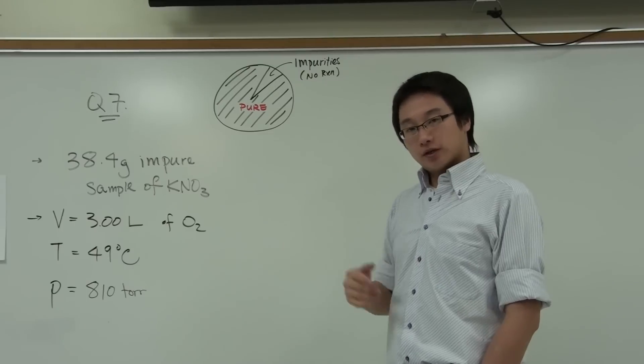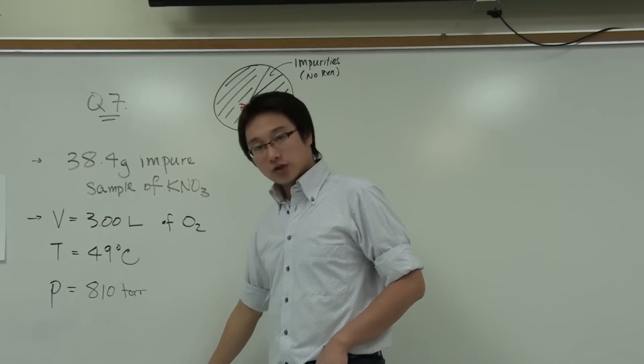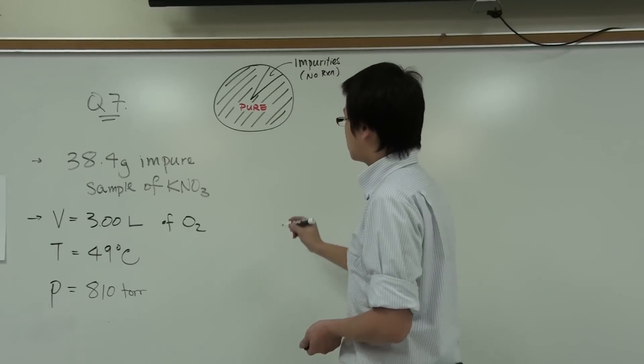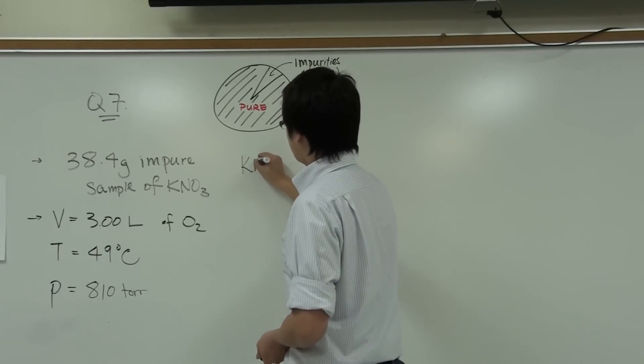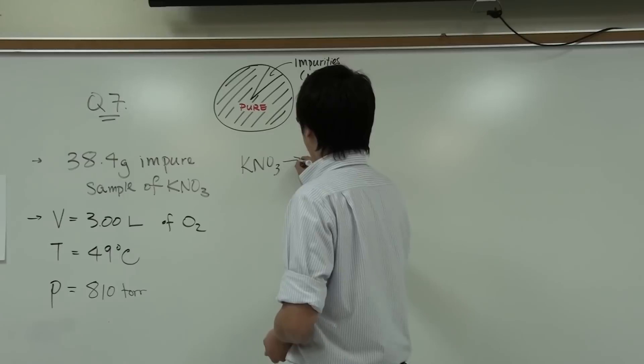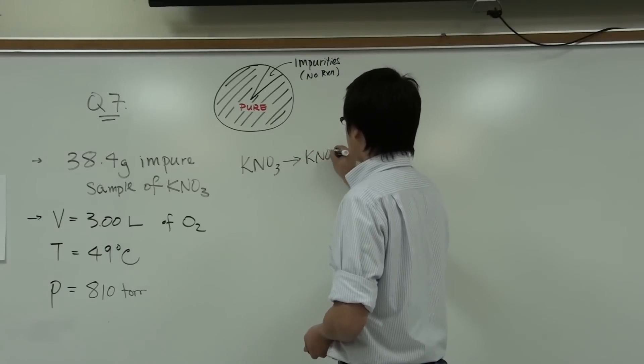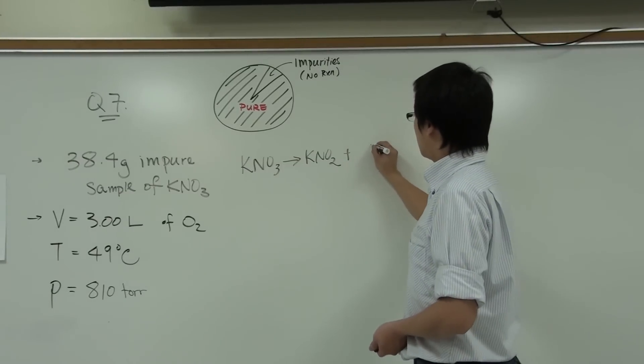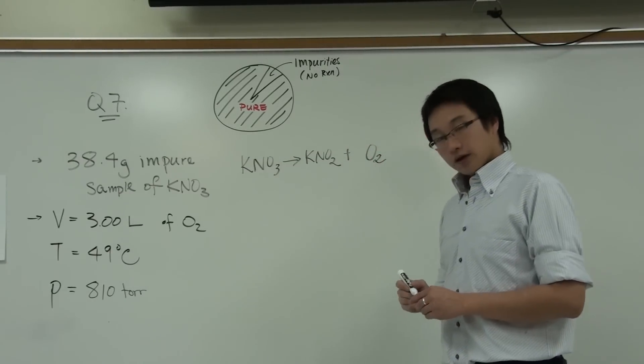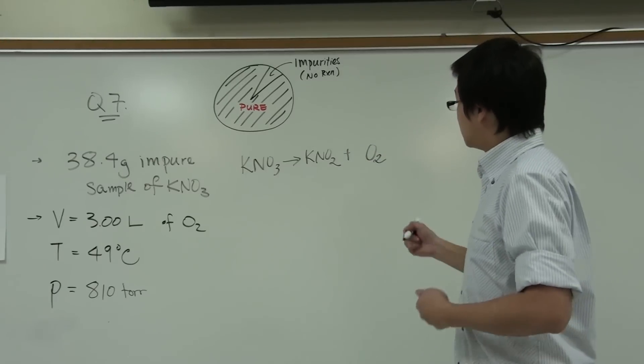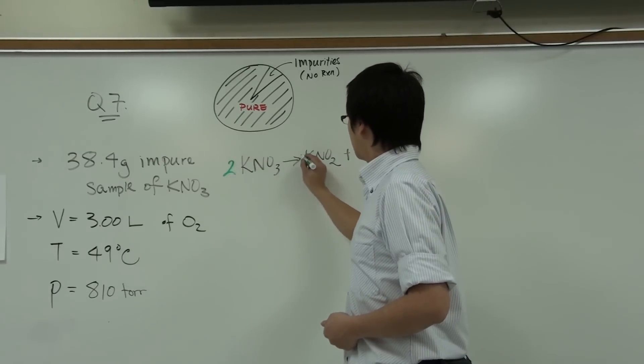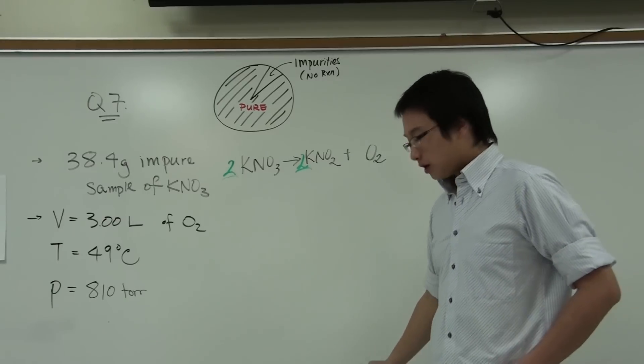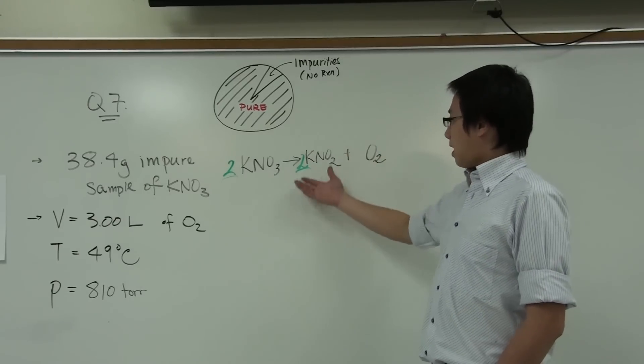Now, based on the problem, we can write a balanced equation of the decomposition reaction. It says that potassium nitrate would decompose to potassium nitrite, KNO2, and O2. Now, we can also balance the equation. So we put a 2 here, a 2 right here to balance the equation.